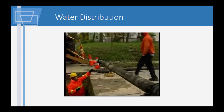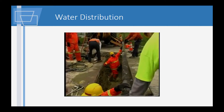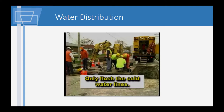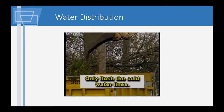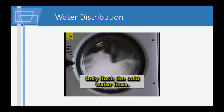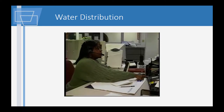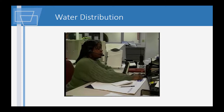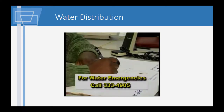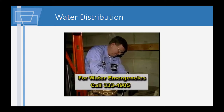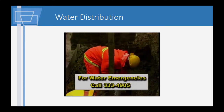Sometimes a main break may cause temporary discoloration in the water — the homeowner should allow the water to run until the discoloration disappears, and during that time laundry should be avoided. Water distribution relies on customers to help monitor the system for leaks and breaks. If you see water bubbling up in the middle of the street or in a yard, please report this situation immediately to the water department. Dispatch personnel can also be contacted to report water meter problems, water pressure problems, and emergency water shutoff needs.